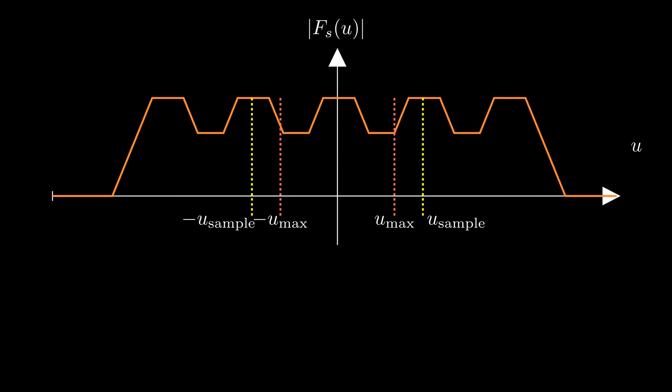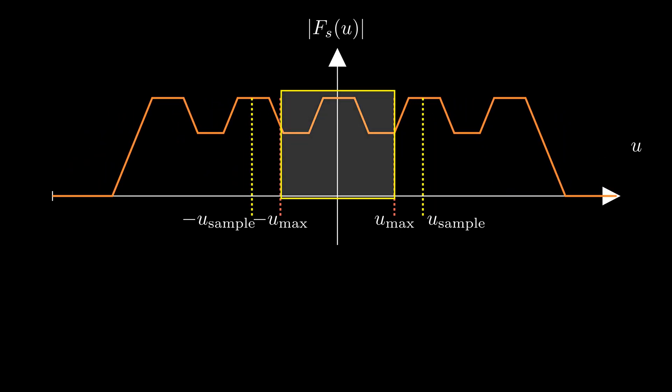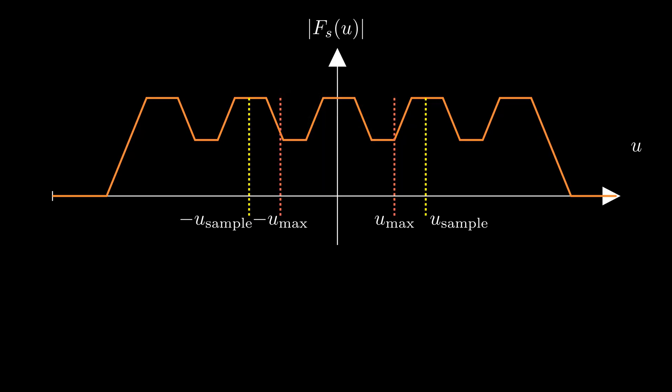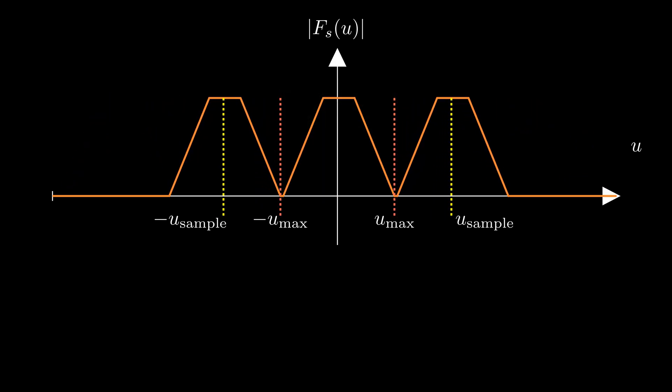But if we go below that, the overlapping copies cause distortion. This is known as the sampling theorem. We must sample at least twice the highest frequency in the signal to avoid aliasing.